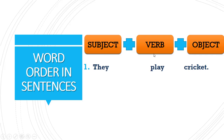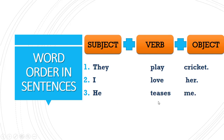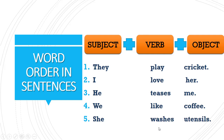Look at these sentences showing word order. 'They play cricket' — 'they' is subject, 'play' is verb, 'cricket' is object. 'I love her' — 'I' is subject, 'love' is verb, 'her' is object. 'He teases me' — 'he' is subject, 'teases' is verb, 'me' is object. 'We like coffee' — 'we' is subject, 'like' is verb, 'coffee' is object.